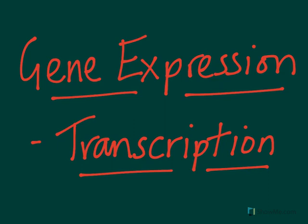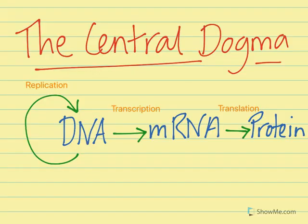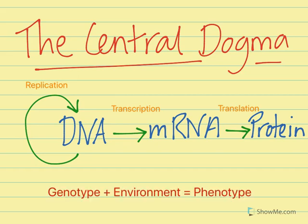Hello everyone and welcome back. After PCR, we have the first part of gene expression, which is transcription. Reminding ourselves of the central dogma, DNA makes mRNA which in turn makes protein. Genotype is determined by the sequence of bases in an organism's genetic code, and the phenotype is an organism's physical and chemical state as determined by the expressed genes and the effect that the environment has upon them.